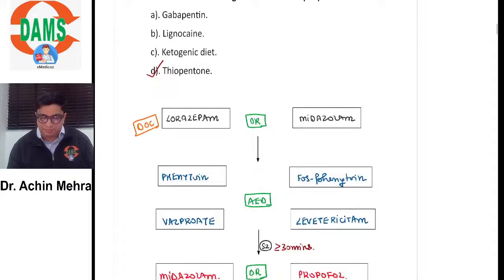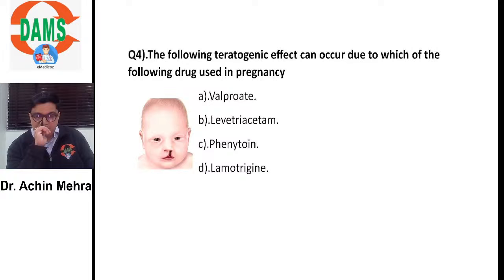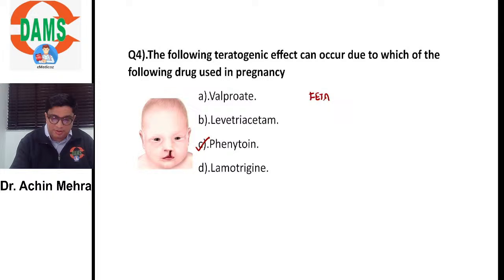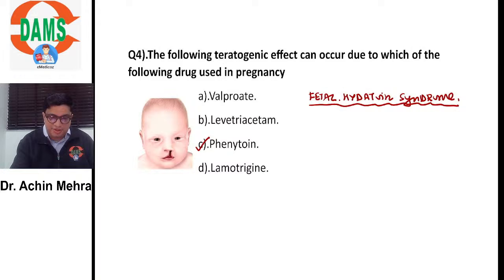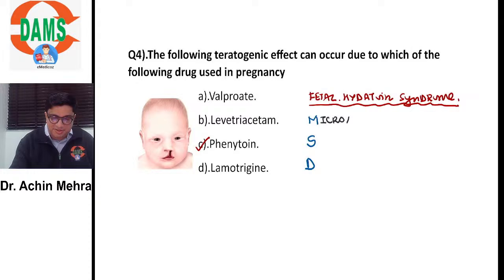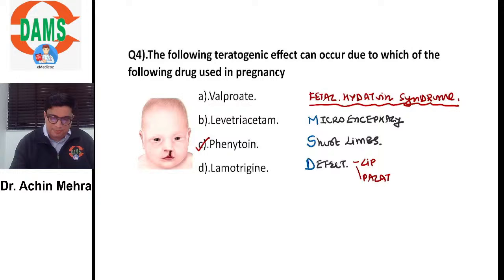The following teratogenic effect — cleft lip and cleft palate — is seen with which antiepileptic drug used in pregnancy? None other than phenytoin, which causes fetal hydantoin syndrome. Features include microcephaly, shorter limbs, and cleft lip and palate. This is what we define as fetal hydantoin syndrome.